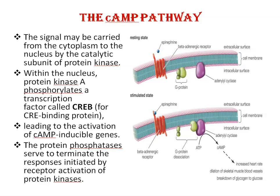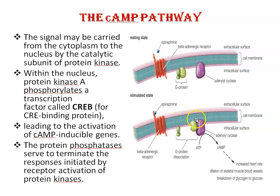Next is the signaling pathway of cAMP. When a first messenger, for example epinephrine — a hormone — binds to a beta-adrenergic receptor in the cell membrane, G-protein activation stimulates cAMP synthesis by the enzyme adenylyl cyclase. Here you can see the beta-adrenergic receptor, epinephrine, the cell membrane, G-protein, and adenylyl cyclase, all shown in resting state and stimulating state.